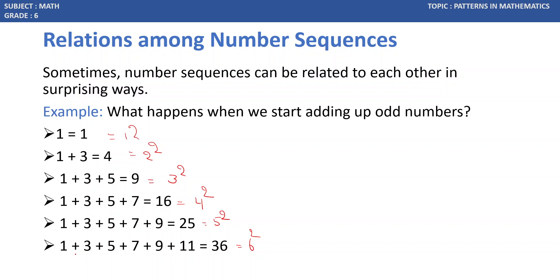So adding the first 6 odd numbers gives us 36, which is 6 squared. Adding the first 5 odd numbers gives us 25, which is 5 squared. For example, if adding the first 10 odd numbers, it will be 100 because 10 squared.